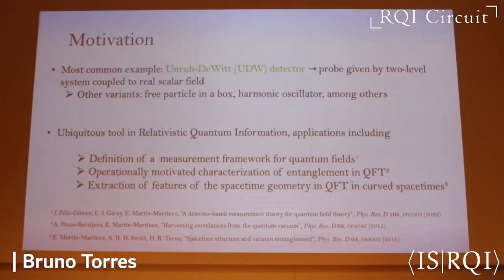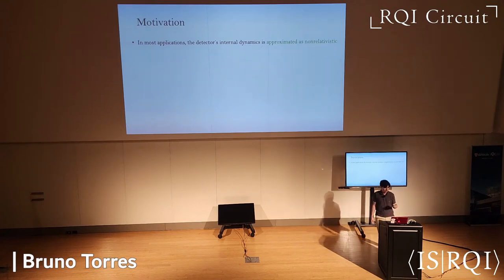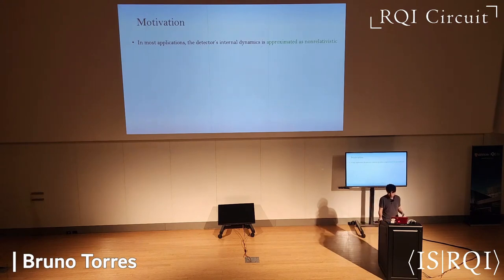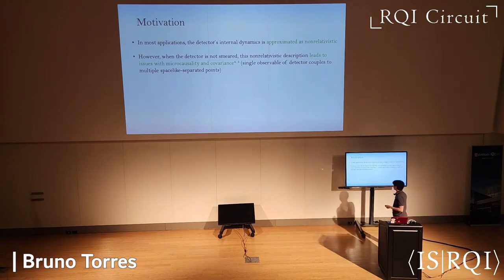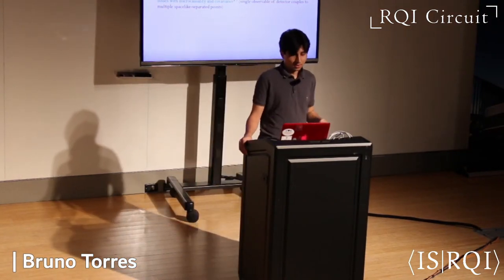It is a generic feature of most examples we use that the detector's internal dynamics is approximated as non-relativistic, which is fine for most applications because the paradigmatic example is something like an atom that can to a very good approximation be treated via a non-relativistic Schrödinger equation determining wave functions for an electron under the effect of a nucleus. But in the more fundamental sense, if the detector is not point-like — if it's smeared — the non-relativistic description of the internal dynamics may lead to issues with relativistic features of the theory.